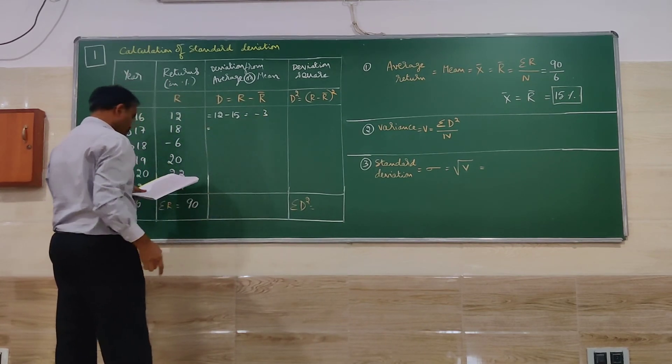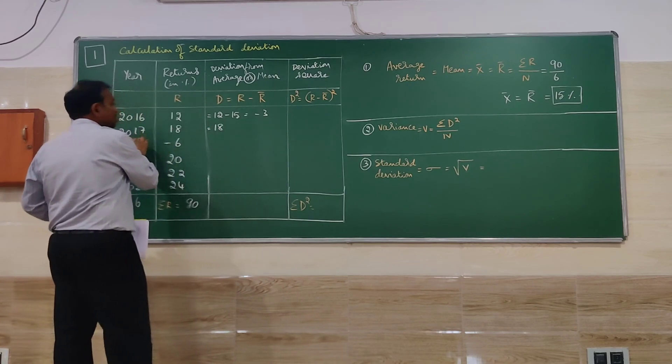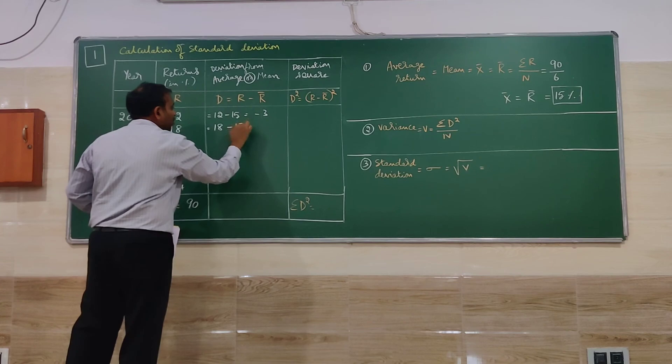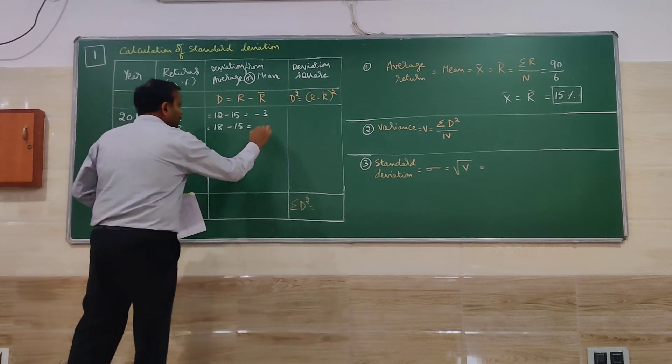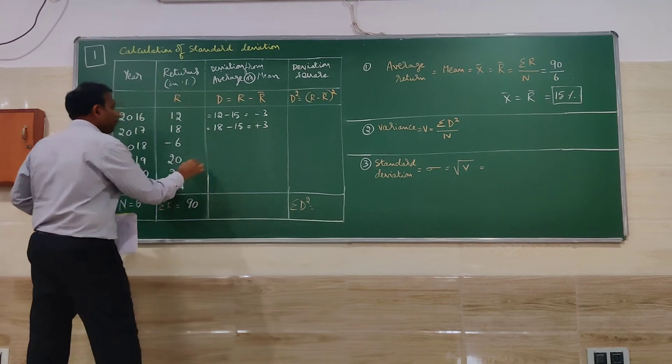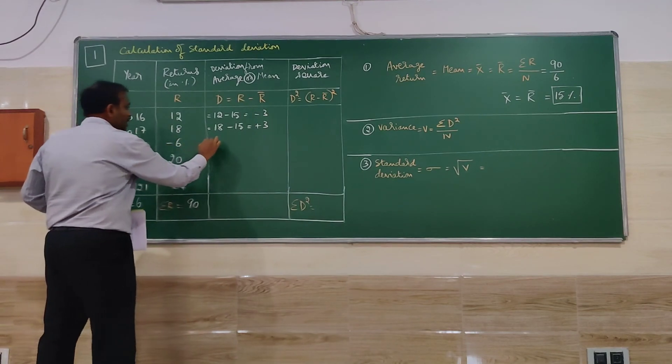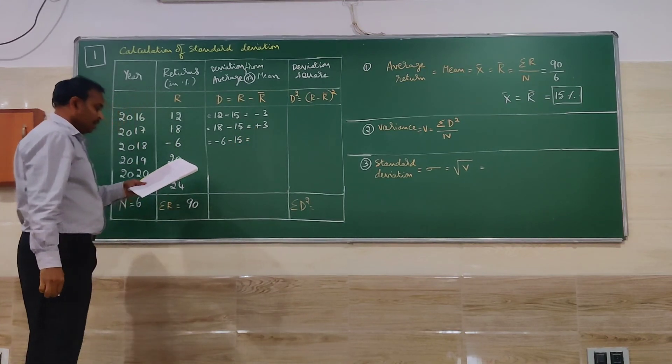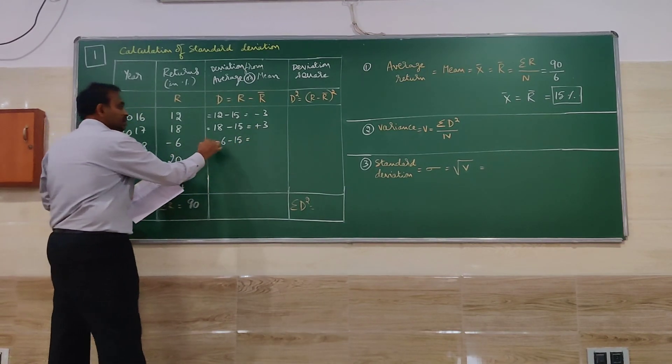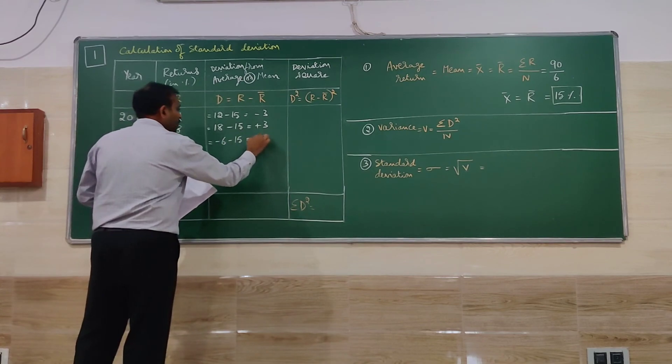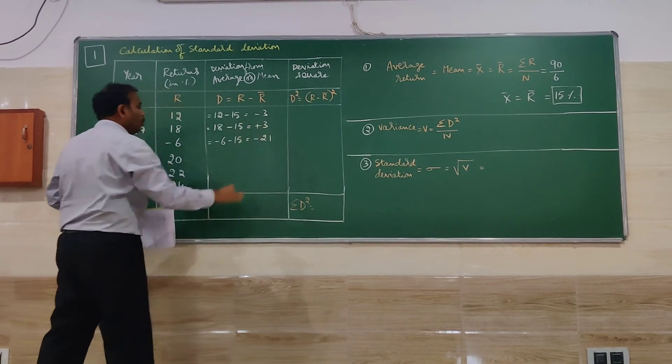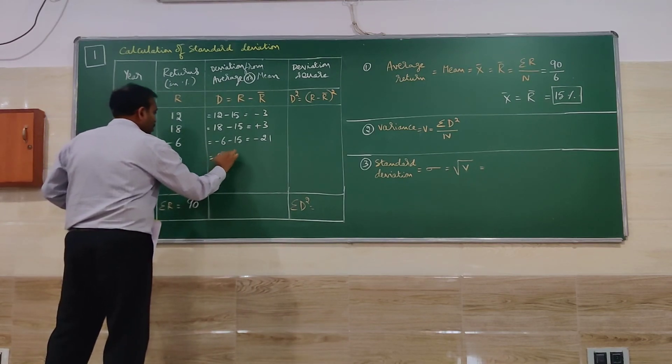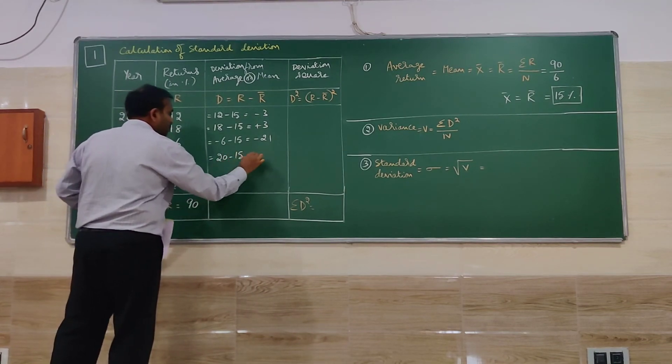Next we will go for 2017: 18 is R. Again minus 15. That is going to be plus 3. Next we have for 2018: minus 6 minus 15. So when we do that, minus 6 and minus 15, it is going to be minus 21. Next for 2019: 20 minus 15. Plus value is more. Plus 5.